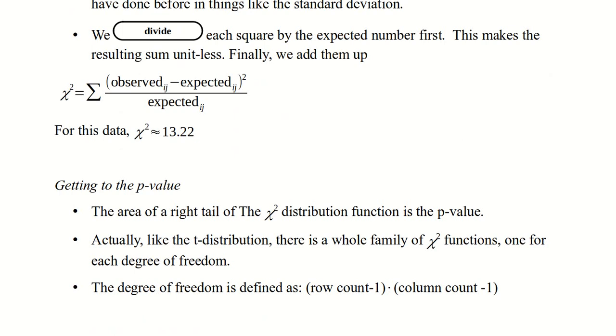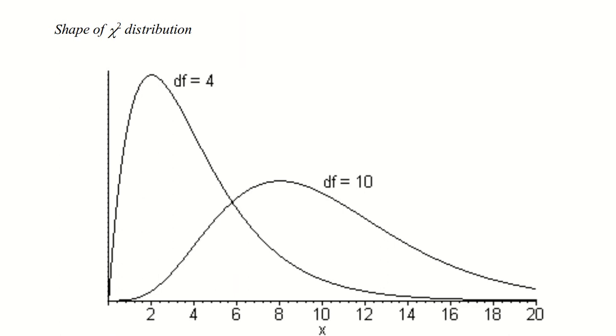Now the next thing that we want to do is figure out our test statistic. That is, we want to get a p-value. So from that chi-squared, we're going to find the area of the right tail of the chi-squared distribution to get the p-value. And like a t distribution, chi-squared depends on the degrees of freedom. The degrees of freedom here, because there are two sets of categorical variables, is the row count minus one times the column count minus one.